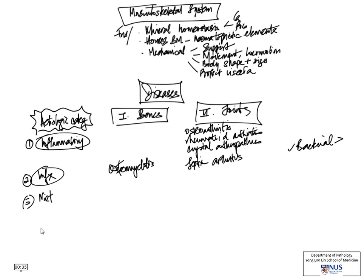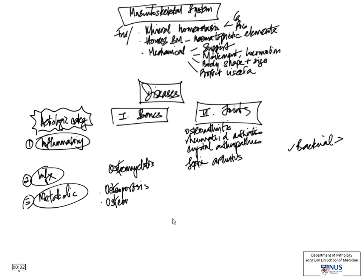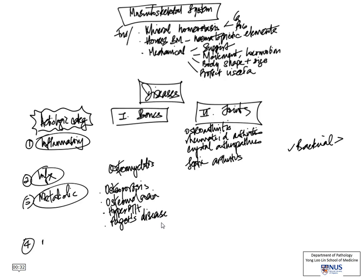The next category is metabolic diseases, which most frequently affect the bones. There are four main metabolic conditions: osteoporosis, which is extremely common and involves a decrease in bone mass; osteomalacia, which is decreased bone mineralization, a little bit different from osteoporosis; hyperparathyroidism, which is excessive bone resorption; and Paget's disease, which is essentially uncoordinated resorption as well as bone formation.